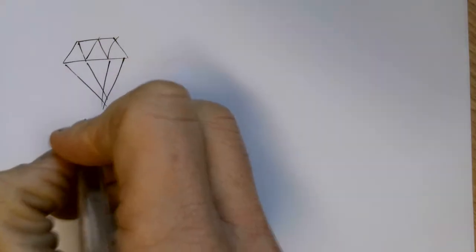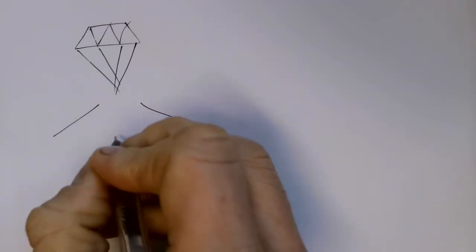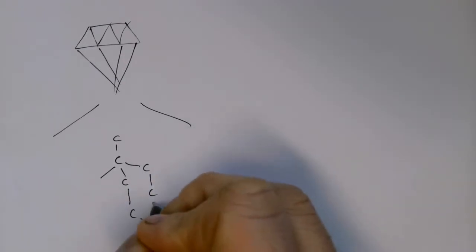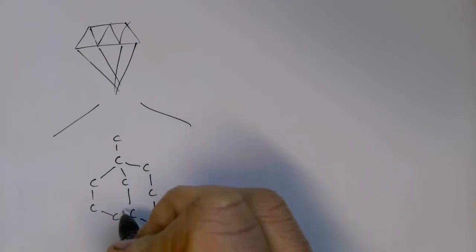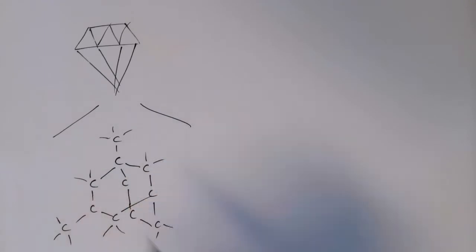We're going to have a look at the structure of diamond and of graphite. If we were to look at the structure of diamond at a really close level, we would see that it is just made of carbon atoms — lots and lots of carbon atoms. Those carbon atoms are each covalently bonded to four other carbon atoms, arranged in rings of six. So each carbon atom is bonded to four other carbon atoms.